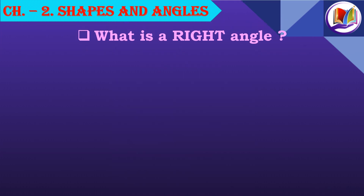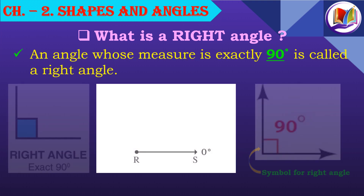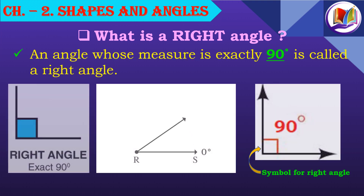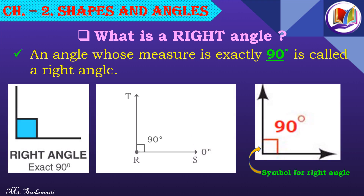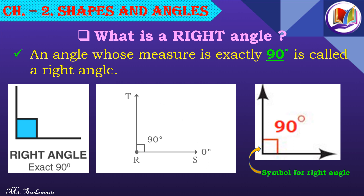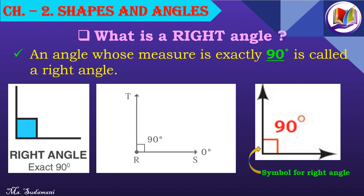What is a right angle? An angle whose measure is exactly 90 degrees is called a right angle. It is marked with the symbol of a square at the vertex, as shown in figures 1 and 3.